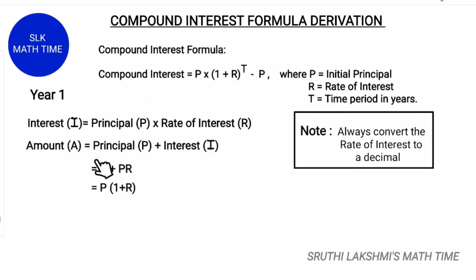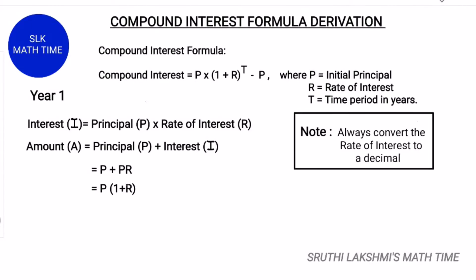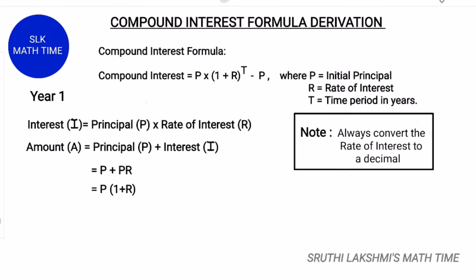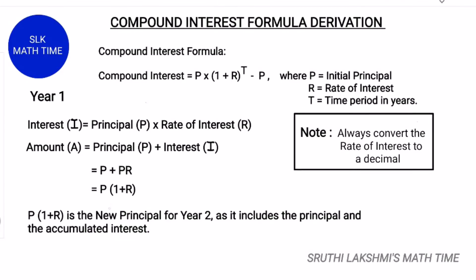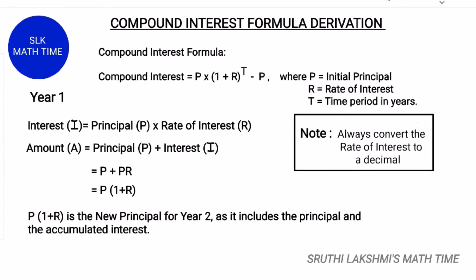We have rewritten this term to P into 1 plus R. P into 1 is P, and P into R is PR. So P into 1 plus R is the new principal for the second year, because it includes the principal and the accumulated interest.